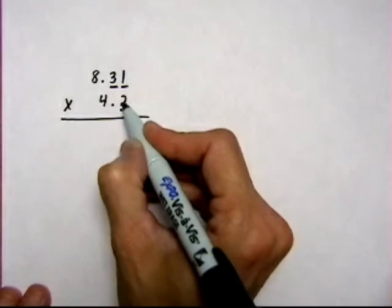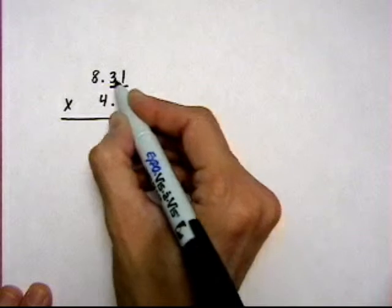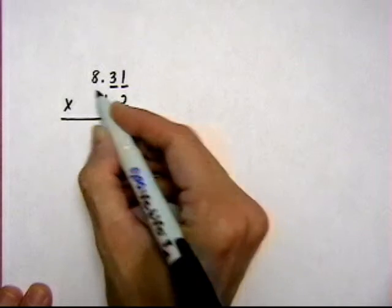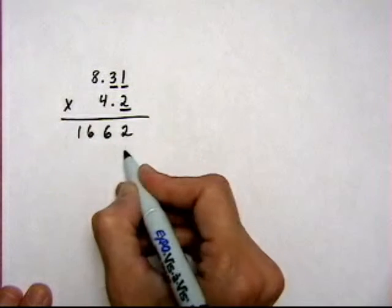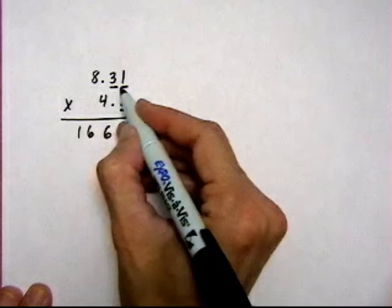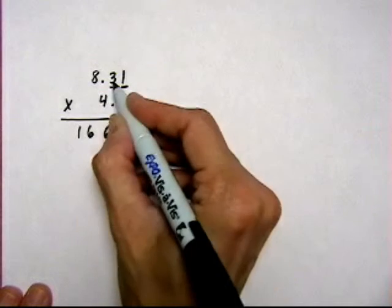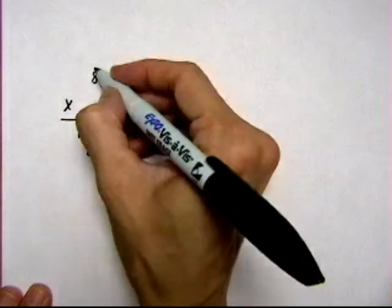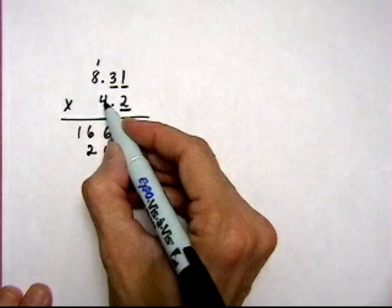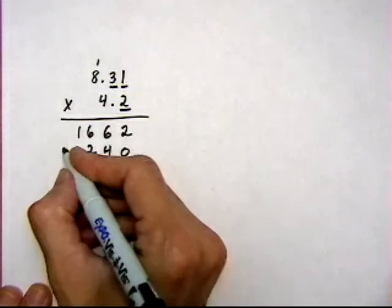So we start with the 2. 2 times 1 is 2. 2 times 3 is 6. 2 times 8 is 16. Put a 0. 4 times 1 is 4. 4 times 3 is 12. So I put the 2, carry the 1. 4 times 8 is 32. Add 1, 33.